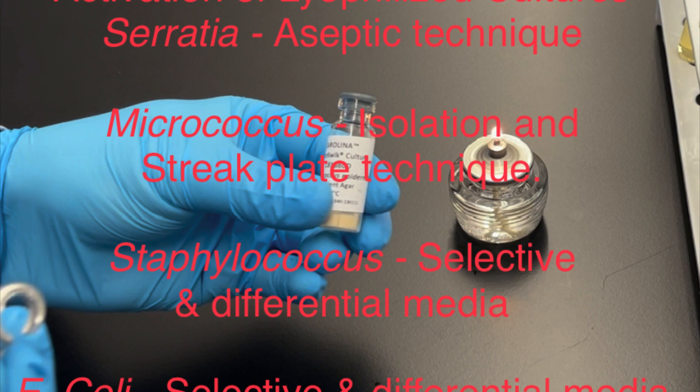you'll have to reactivate serratia. So that's the bacteria that you should reactivate. Another bacteria called micrococcus you will reactivate when you are starting the isolation and streak plate procedure. That's the second lab we'll do.